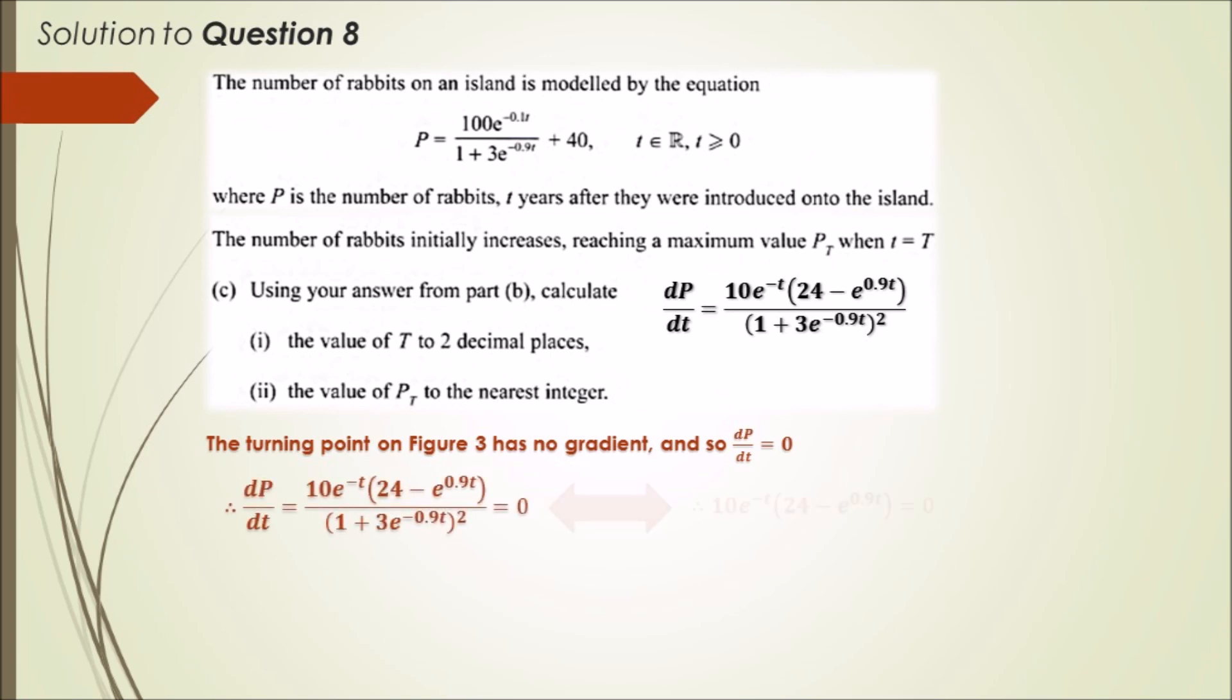Notice that the bottom half of the fraction multiplying against zero will cancel out, and you're left with 10e^(-t) times (24 - e^(0.9t)) equals zero. The first solution, 10e^(-t) equals zero, has no solution because you can't have log of zero.